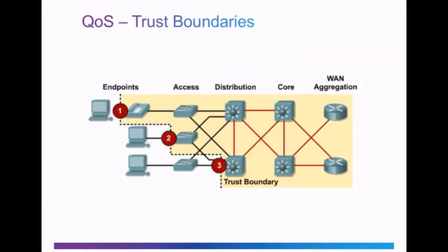QoS marking happens at trust boundaries, and marking should happen as close to the source as possible. Endpoints like voice over IP phones, wireless access points, and video conferencing gateways have the ability to mark QoS packets. Traffic can also be marked using Layer 2 switches or at Layer 3 using Layer 3 switches and routers. As packets travel across the network, the remarking of traffic can be necessary — remarking of class of service values, IP Precedence values, or DSCP values.